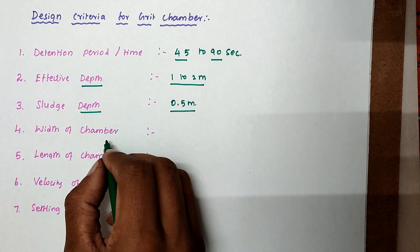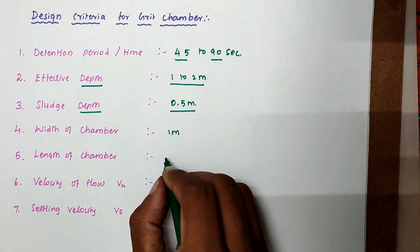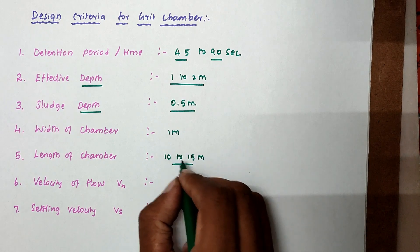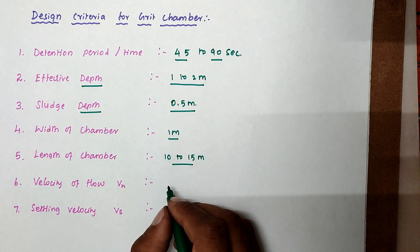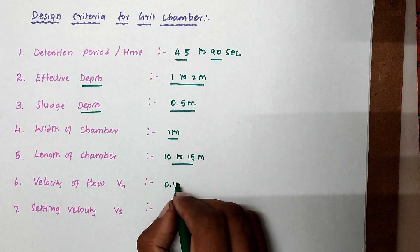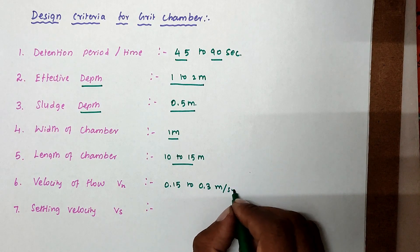Then width of chamber - the width of chamber is 1 meter. Length of chamber is nearly 10 to 15 meters. The flow velocity will be 0.15 to 0.3 meter per second.